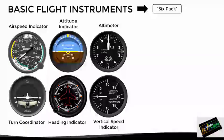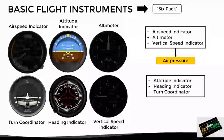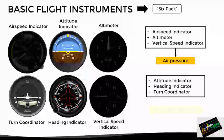However, it is not enough just to know what information these instruments give us and how to interpret it, but also to know how they work — that is, their principle of operation. In this case, three of these instruments — specifically the airspeed indicator, the altimeter, and the vertical speed indicator — use air pressure to give their readings. While on the other hand, the attitude indicator, the heading indicator, and the turn coordinator rely on gyroscopic principles to work.